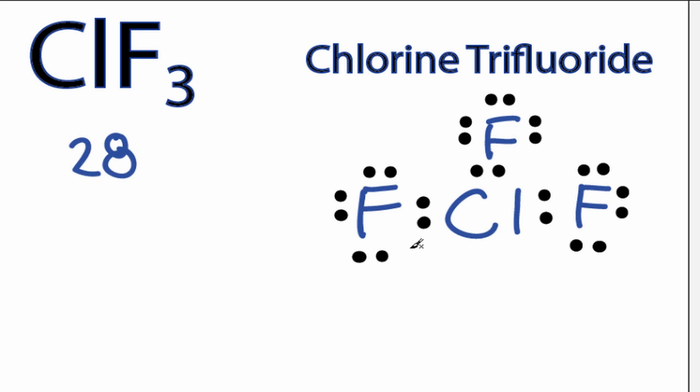That means we have 4 valence electrons left over, and we're going to put those 2 pairs, those 4 valence electrons, on the central chlorine right here. We're going to put those 2 pairs of electrons on the chlorine like this.